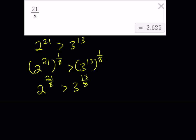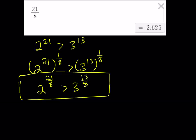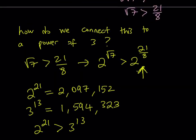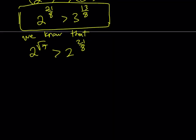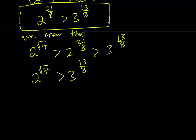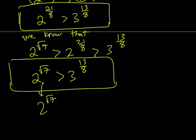Now we combine everything. We already know that 2 to the power root 7 is greater than 2 to the power 21 eighths, and 2 to the power 21 eighths is greater than 3 to the power 13 eighths. By the transitive property, this shows that 2 to the power root 7 is greater than 3 to the power 13 eighths. So the answer is 2 to the power root 7 is the greater number.